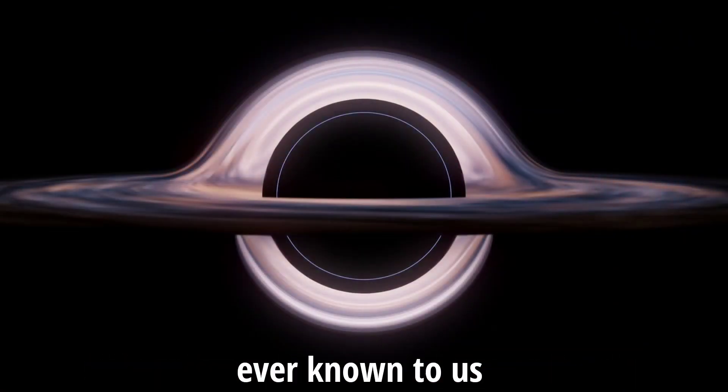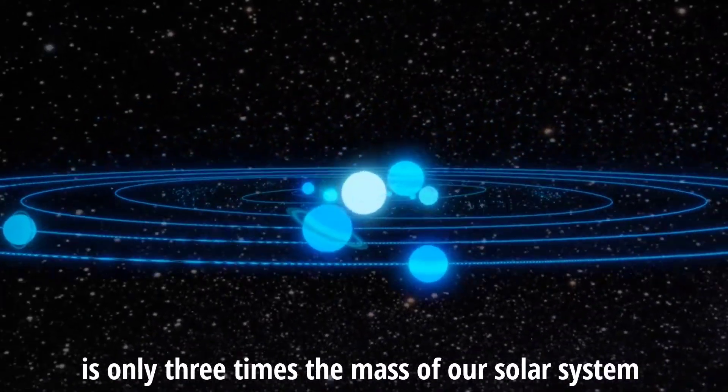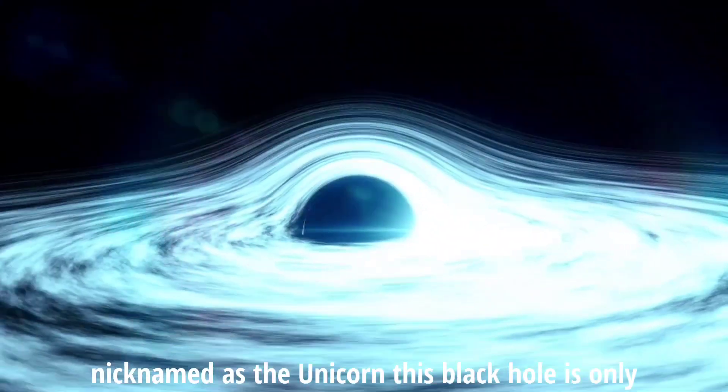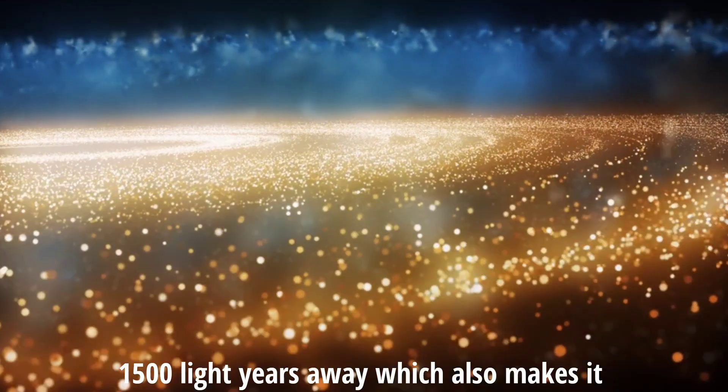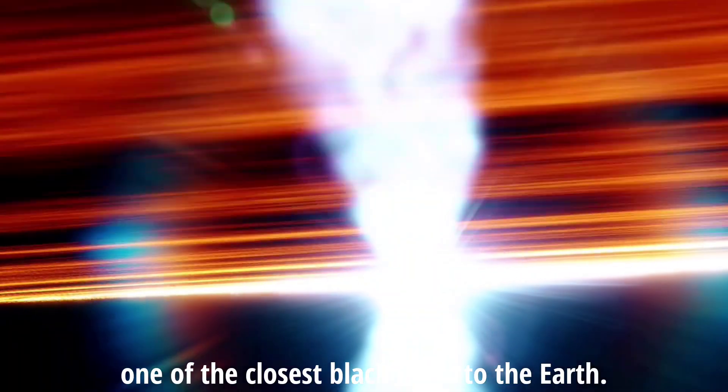Did you know that the smallest black hole ever known to us is only three times the mass of our solar system? Nicknamed the Unicorn, this black hole is only 1,500 light-years away, which also makes it one of the closest black holes to Earth.